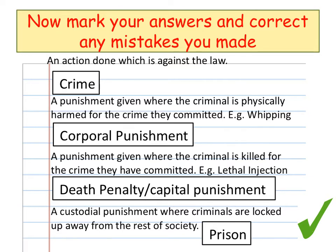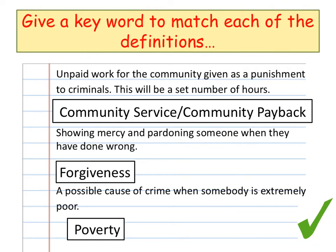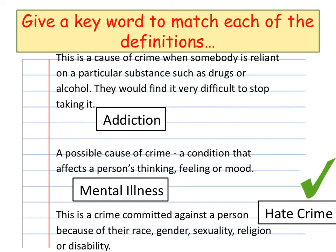A custodial punishment where criminals are locked up away from the rest of society is prison. Unpaid work for the community given as a punishment to criminals, for a set number of hours, is community service, also known as community payback. Showing mercy and pardoning someone when they have done wrong is forgiveness. A possible cause of crime when someone is extremely poor is poverty. When somebody is reliant on a particular substance such as drugs or alcohol and would find it very difficult to stop taking it, that is addiction. A possible cause of crime — a condition that affects a person's thinking, feeling or mood — is mental illness.